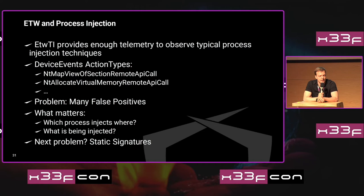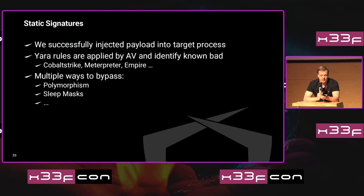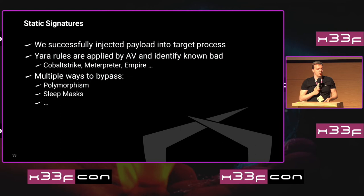What actually matters, in my opinion, is which process injects into which other process and, more importantly, what is actually being injected. If you inject a plain Cobalt Strike beacon into another process in the most stealthy way, it will still be picked up simply because it's Cobalt Strike. So our next problem is static signatures — we need to think about how to avoid or evade them. YARA rules are applied by security products to identify if what's in memory is something they already know.